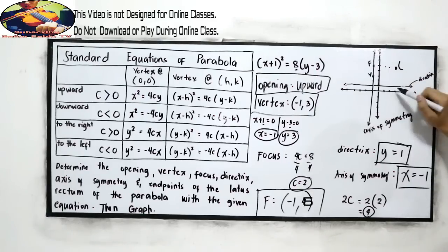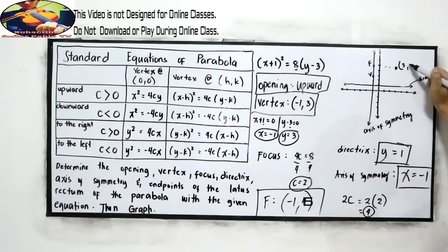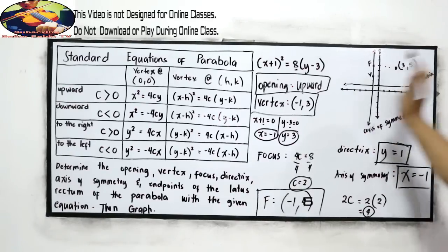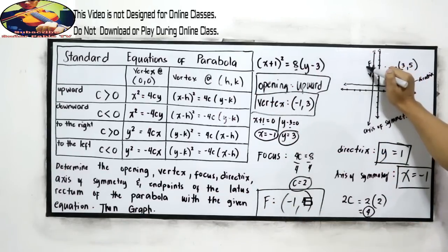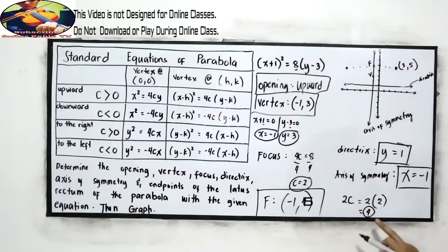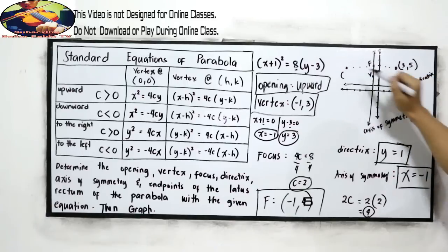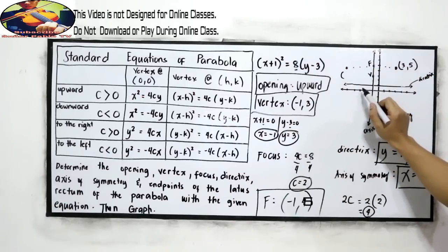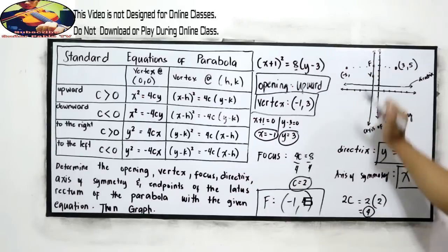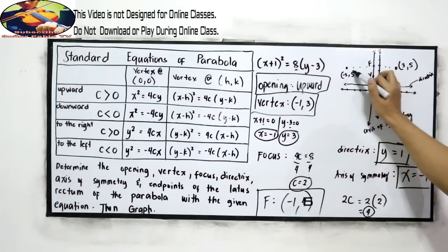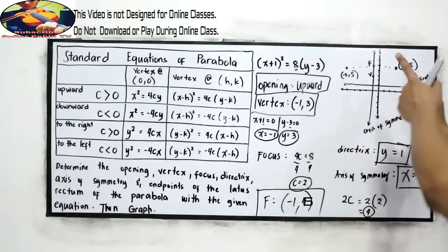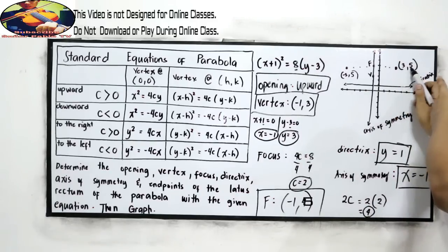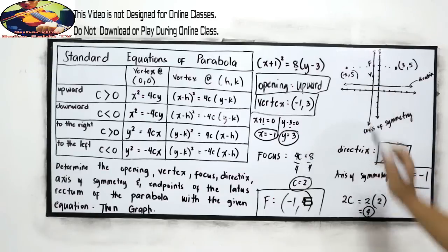So our coordinates is... positive 3. Then 1, 2, 3, 4, 5. And the other endpoint. Focus. 4 units to the left. 1, 2, 3, 4. So we have the coordinates. Negative 1, negative 2, negative 3, negative 4, negative 5. Positive 5 for our y-axis. The endpoints are: the rightmost point is (3, 5), and the leftmost is (-5, 5).